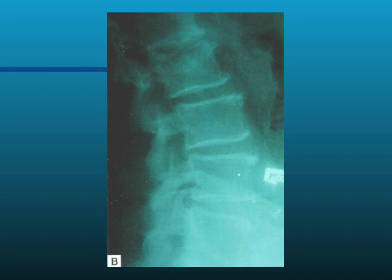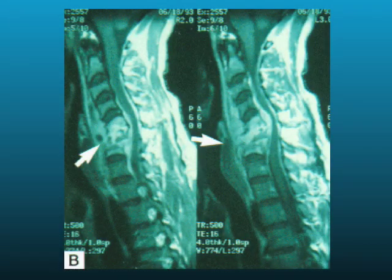On this plain film, you see nice preserved spaces and clear margins of the vertebral bodies, except for this disc space, which is lost. You've got very blurred, indistinct margins — that's an area of discitis. On the MRI, you can very clearly see destruction of the disc space with some abscess formation.